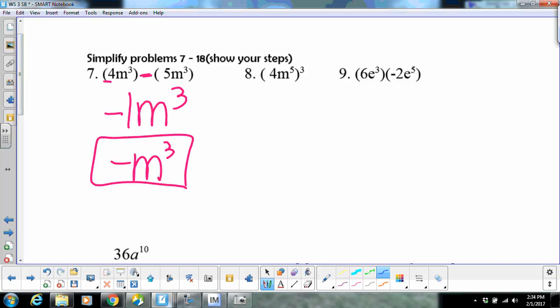Alright, problem number eight is a power to a power problem. What that means is we're going to take this power and it's going to have to go to everything in here. So that's like four to the third and then m to the five times three. Four to the third means four times four times four, or sixteen times four, which is sixty four, to the fifteenth.